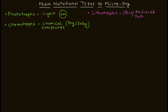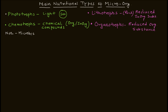The word 'rock' indicates inorganic substances, so lithotropes are organisms that use reduced inorganic substances. The fourth category is organotropes — organotropes are those microorganisms that use reduced organic substances. These are some of the introductory types.